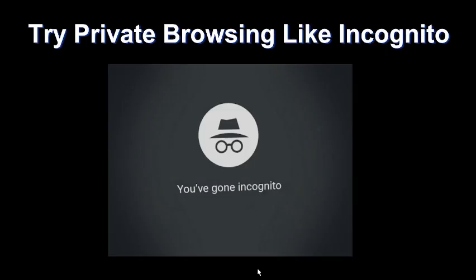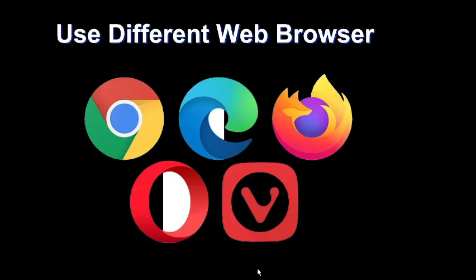The next option is to try private browsing, like Incognito. This is the private web browser mode for Chrome. You can use the equivalent private mode for other browsers as well. You can also try a different web browser — for example, if you're using Chrome, you can try Firefox or Safari — to see whether the issue is with any specific web browser.